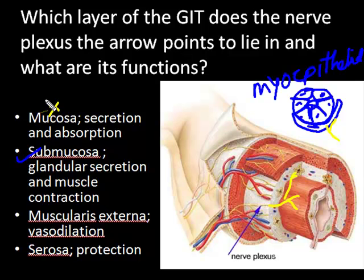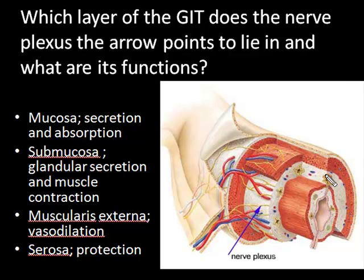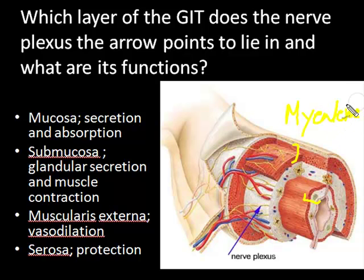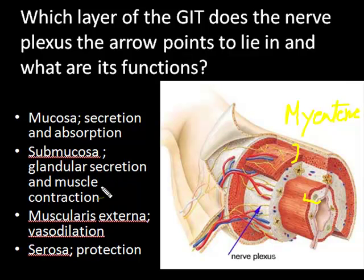The mucosa is not correct because the nerve plexus does not lie in the mucosa. It is not lying in the muscularis externa either — the myenteric nerve plexus lies there and the arrow is not pointing to that one. The nerve plexus also does not lie in the serosa and protection is not one of its functions. You should also know that this nerve plexus is primarily parasympathetic, which is why its actions are glandular secretion and muscle contraction.